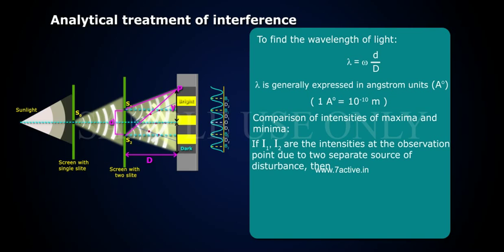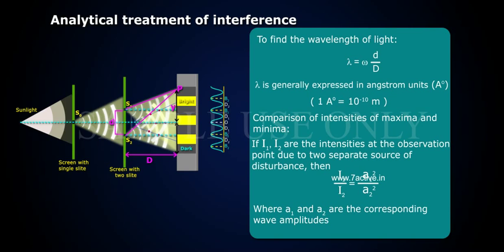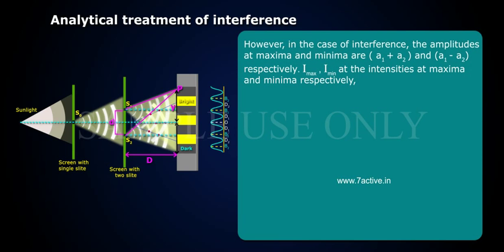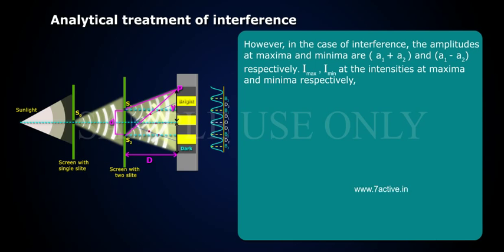For comparison of intensities of maxima and minima: if I1 and I2 are the intensities at the observation point due to two separate sources, then I1 by I2 equals A1 squared by A2 squared, where A1 and A2 are the corresponding wave amplitudes. In the case of interference, the amplitudes at maxima and minima are A1 plus A2 and A1 minus A2 respectively.